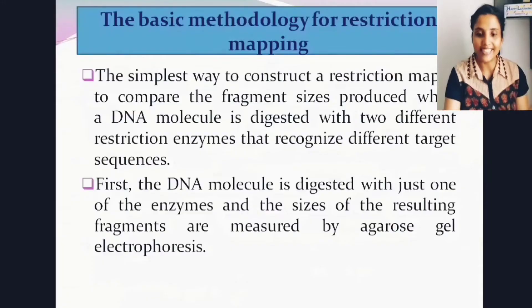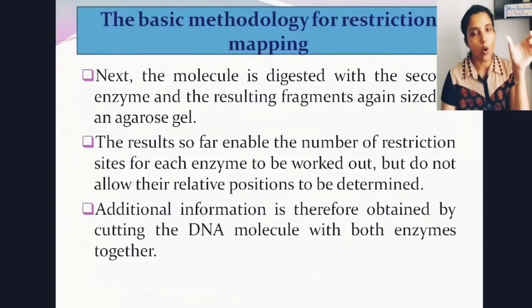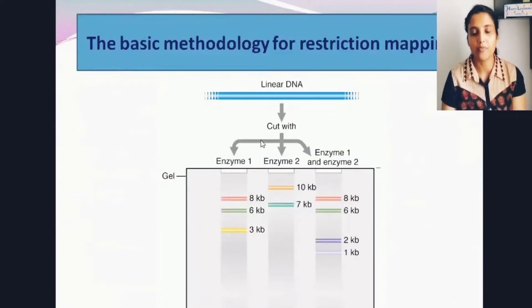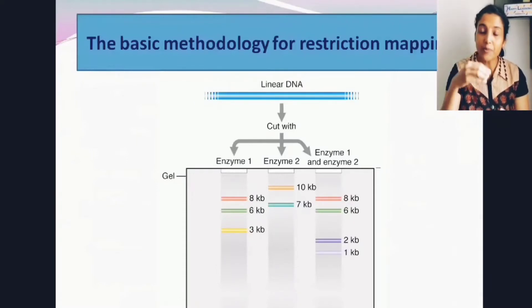What we do is take the DNA fragment we want to map and perform restriction digestion individually with two or more restriction enzymes. We see what number of fragments each produces, then combine all the restriction enzymes together and see what the mixture gives us. Based on the data collected, we form a map.